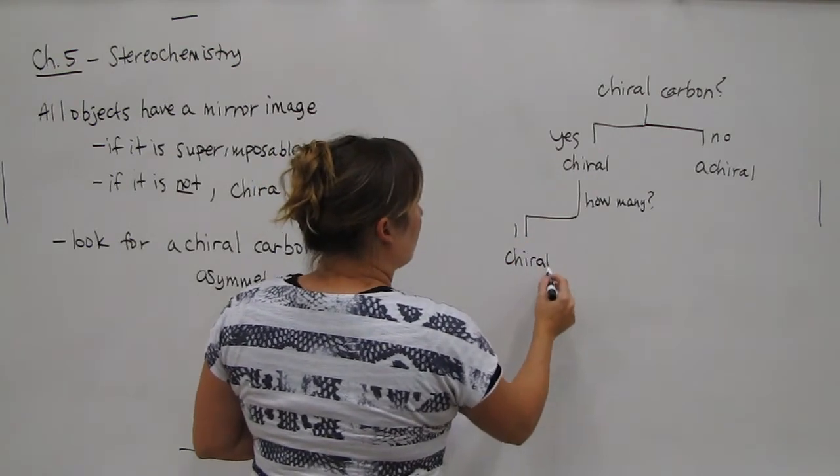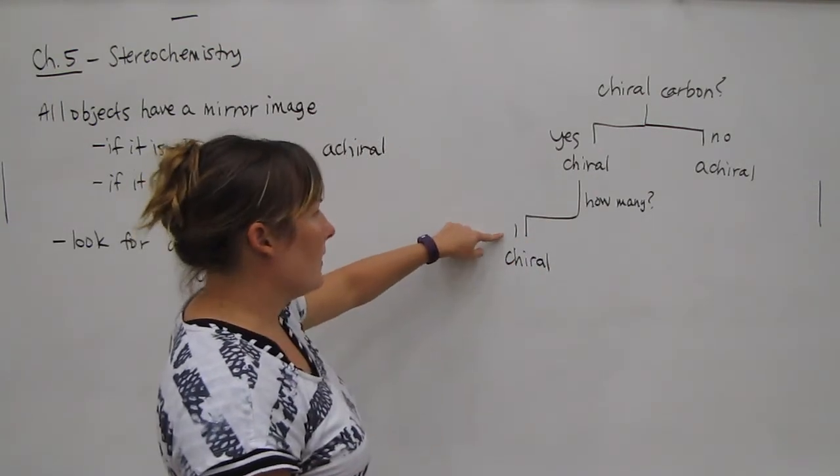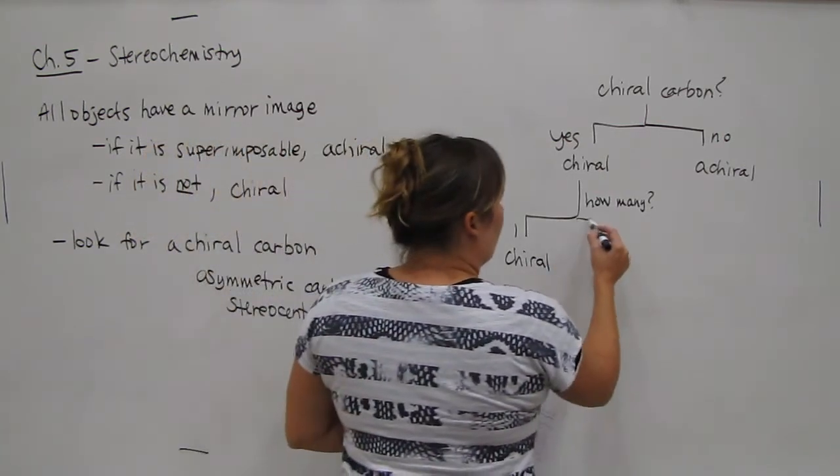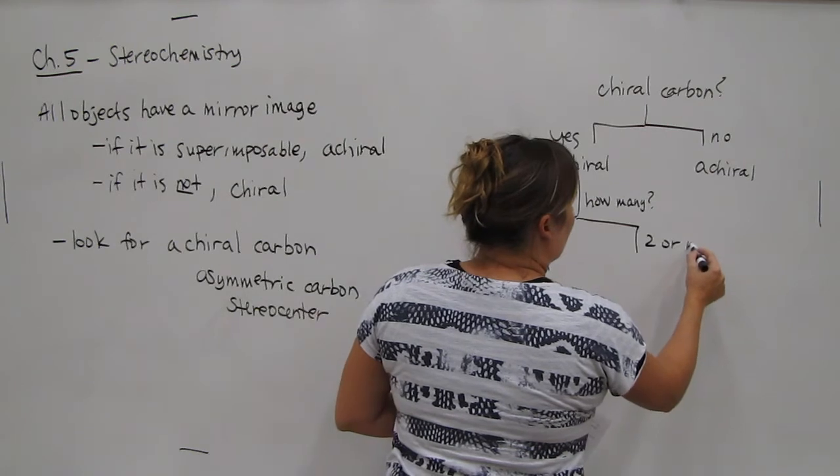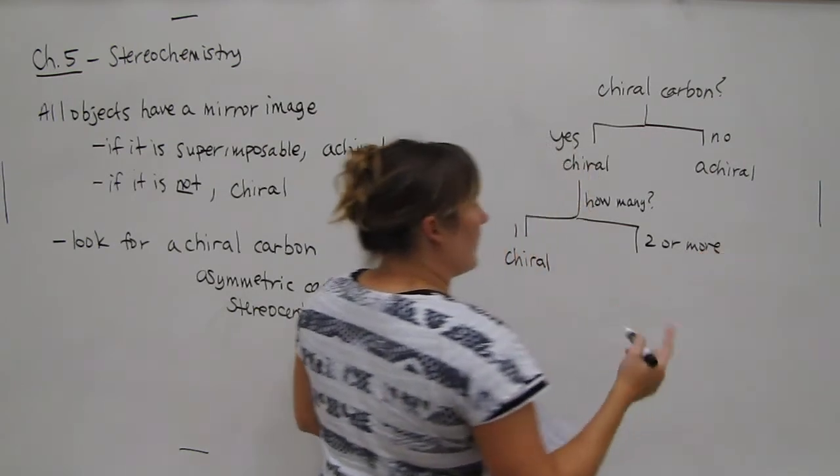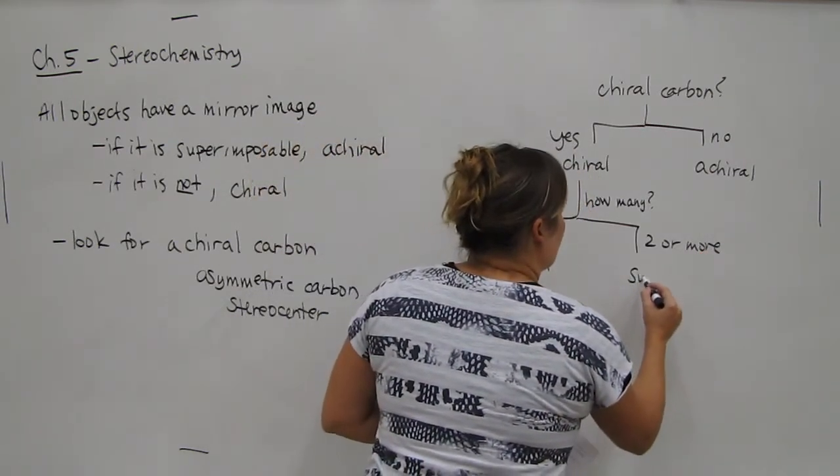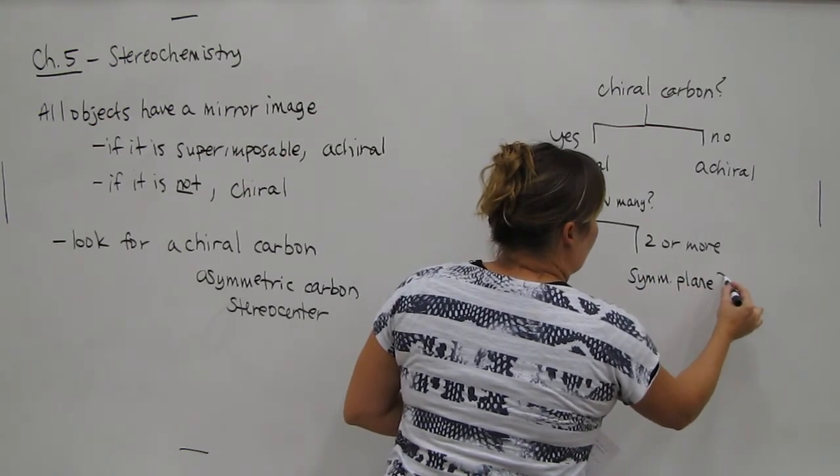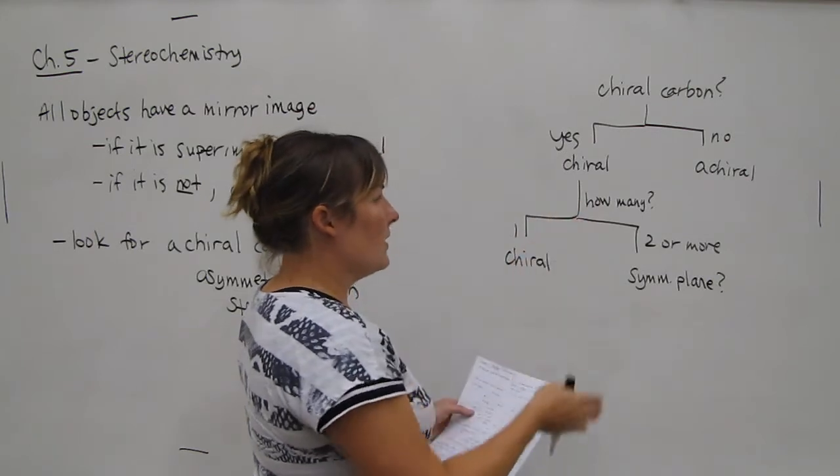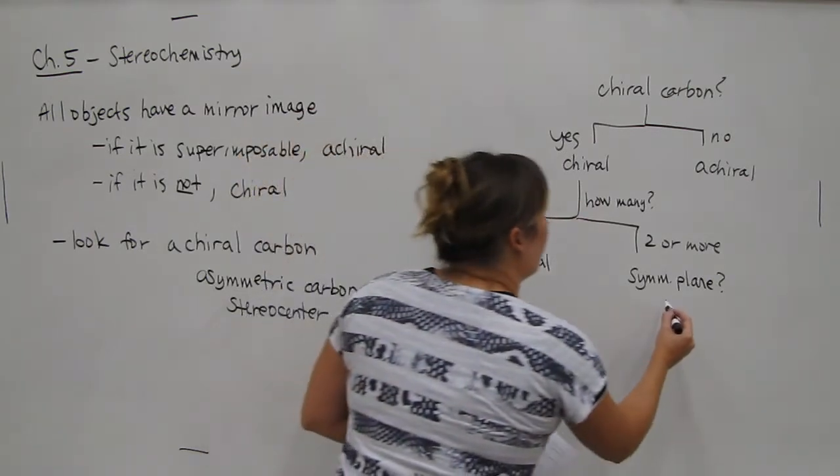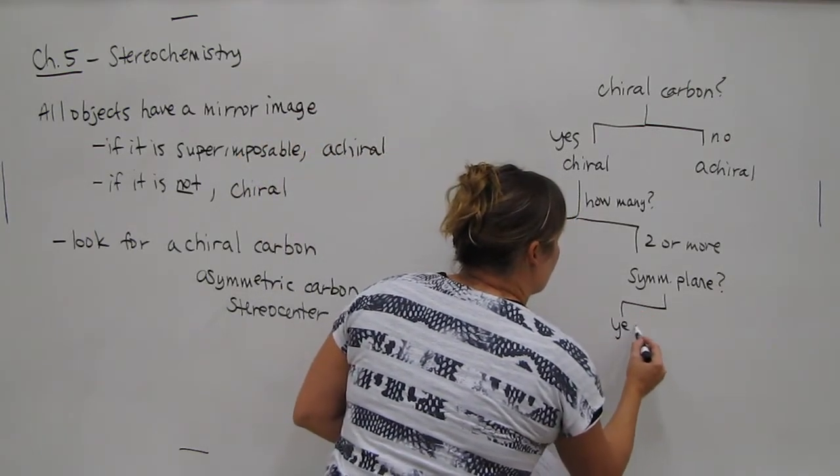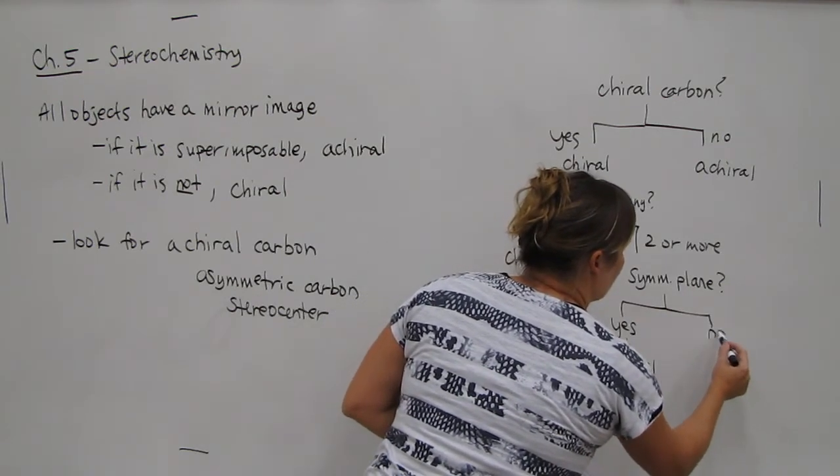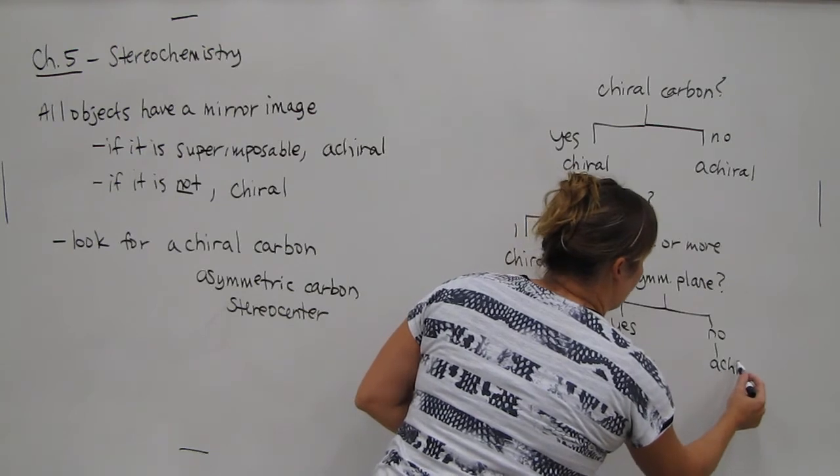If your answer is one, then your molecule is chiral. So if you have only one chiral carbon, your molecule must be chiral. If there are two or more, then you have to ask yourself another question, which is, do I have a symmetry plane? And this is a plane of symmetry within the molecule. If your answer is yes, your molecule is achiral.